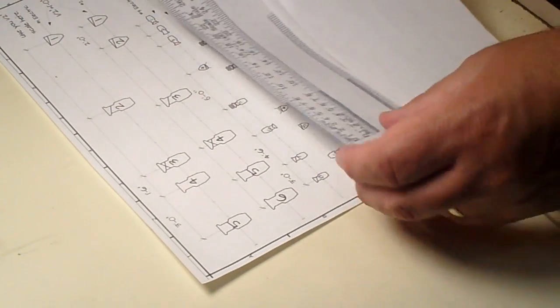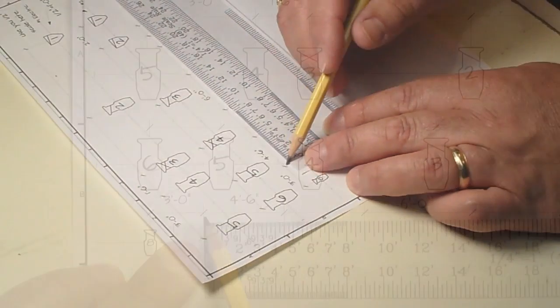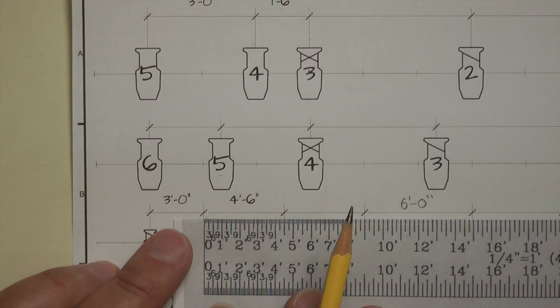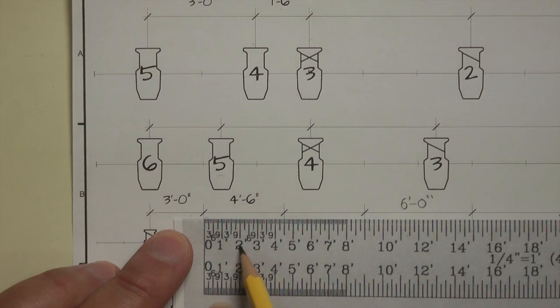So if we take a quarter-inch, put it here between these two lines, which is for these two units, we have one, two, three, four, four feet six inches distance.